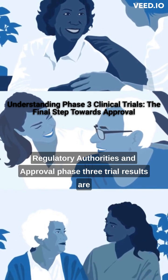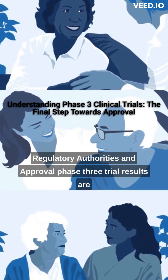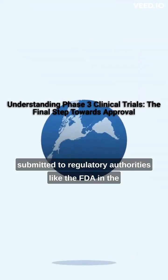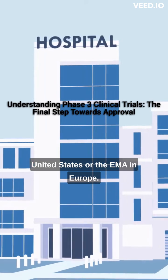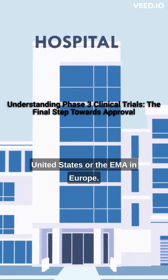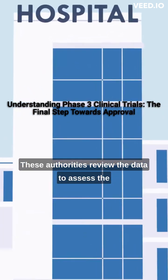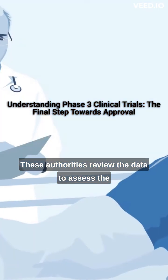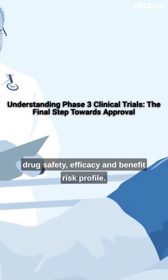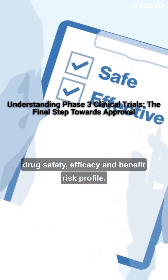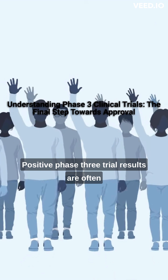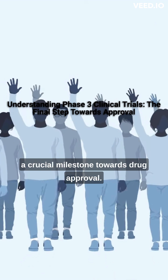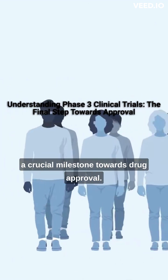Regulatory authorities and approval: Phase 3 trial results are submitted to regulatory authorities like the FDA in the United States or the EMA in Europe. These authorities review the data to assess the drug's safety, efficacy, and benefit-risk profile. Positive Phase 3 trial results are often a crucial milestone towards drug approval.